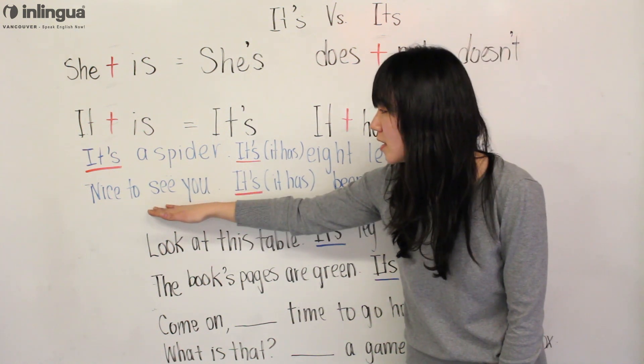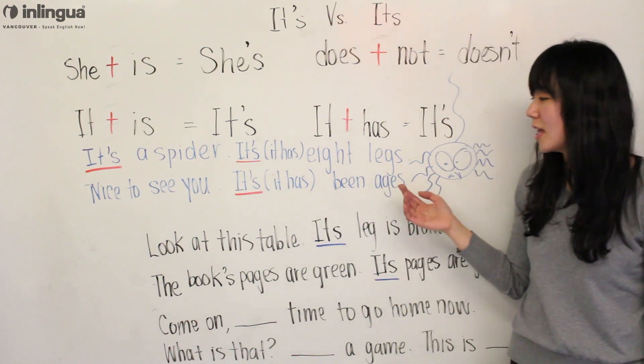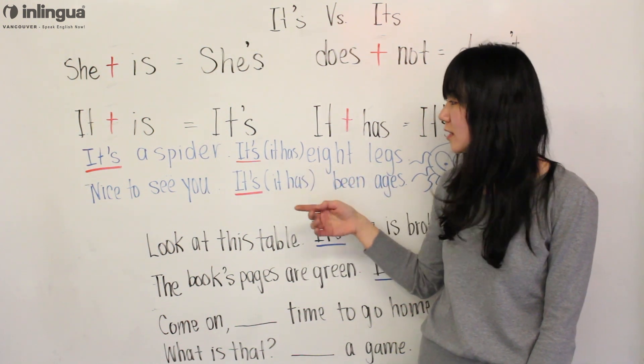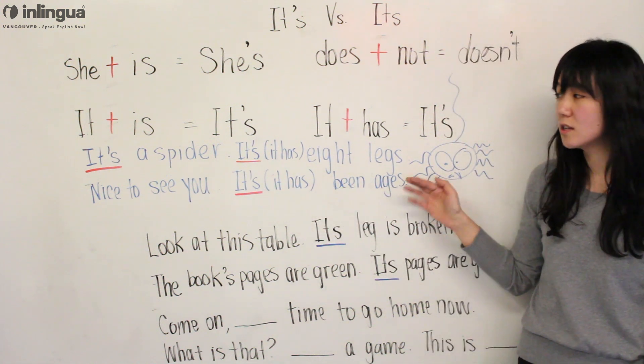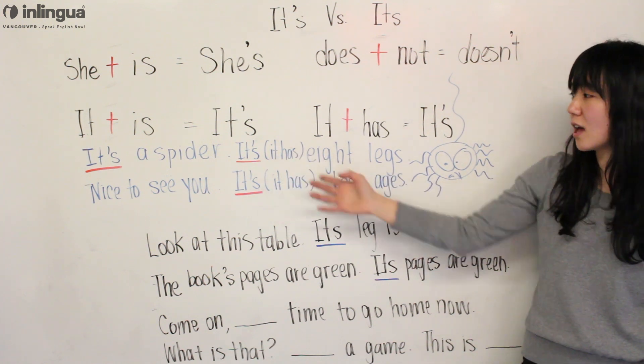Another example here is 'Nice to see you. It's been ages.' It means IT HAS BEEN ages, not IT IS been ages. So you have to look at the context to see if it's IT IS or IT HAS.